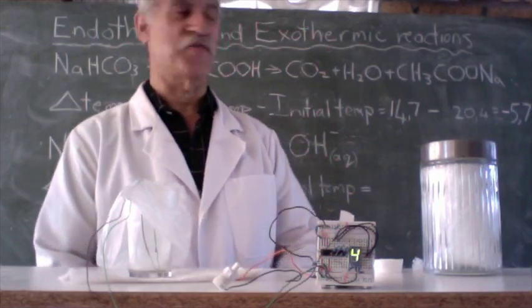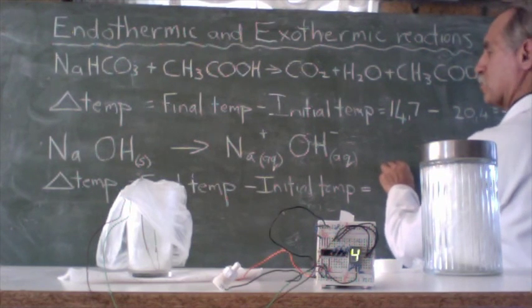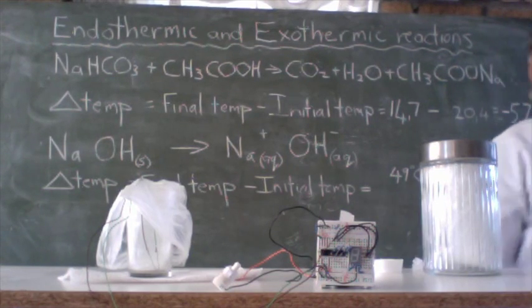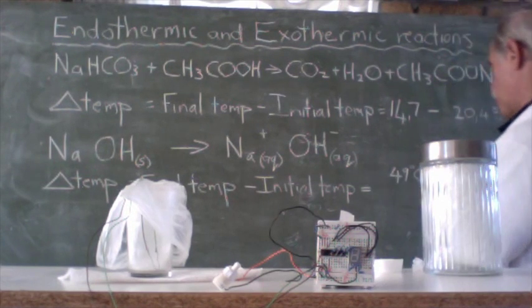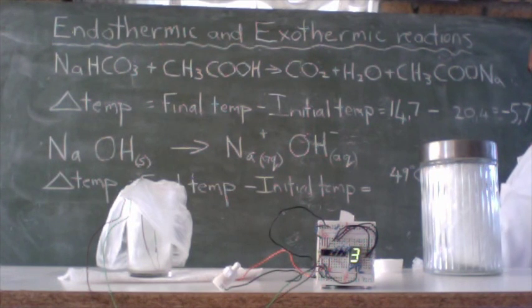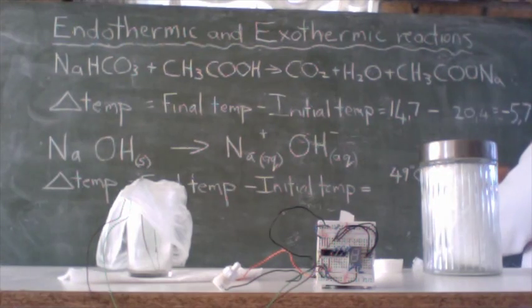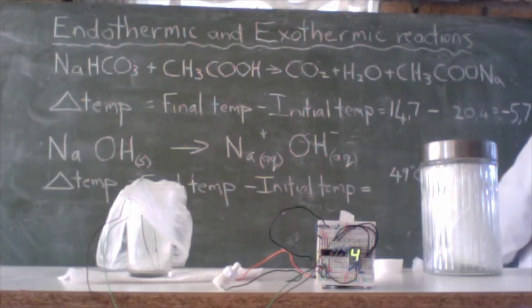49 degrees. So our final temperature was 49 degrees centigrade minus 25.1. Let's work out what the change in temperature was. So 49 minus 25.1 equals positive 23.9. Let's make it 24 to round it off. 24 degrees centigrade change, positive.